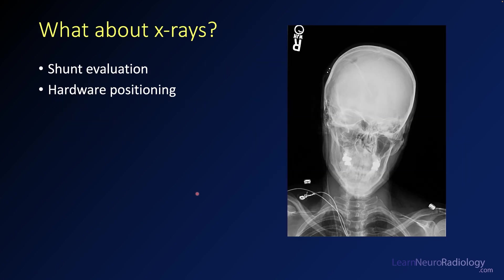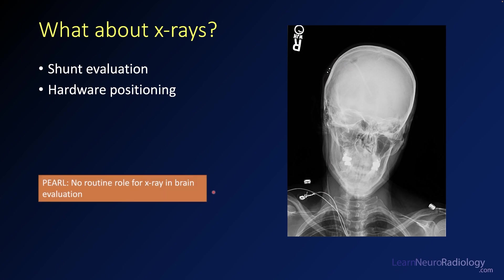What is the role of x-rays in neuroradiology? It's fairly limited. We really just do it to evaluate shunts — to see if they're in an appropriate position and if they have any discontinuity. Sometimes we'll do x-rays to evaluate hardware or metal implants before MRI. Here you can see an x-ray of a patient with a shunt, showing the programmable device and the shunt tubing coming down the side of the neck. There's really no routine role for x-ray in brain evaluation — you can't see the brain, and it's simply not useful.